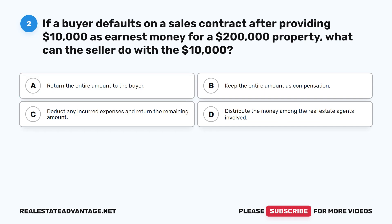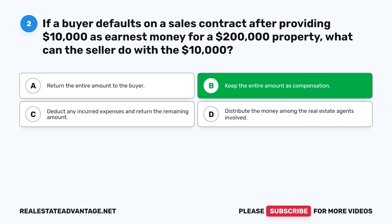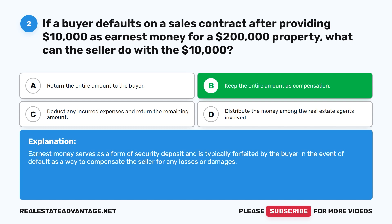Question 2: If a buyer defaults on a sales contract after providing $10,000 as earnest money for a $200,000 property, what can the seller do with the $10,000? A. Return the entire amount to the buyer. B. Keep the entire amount as compensation. C. Deduct any incurred expenses and return the remaining amount. D. Distribute the money among the real estate agents involved. The correct answer is B: Keep the entire amount as compensation. Earnest money serves as a form of security deposit and is typically forfeited by the buyer in the event of default as a way to compensate the seller for any losses or damages.